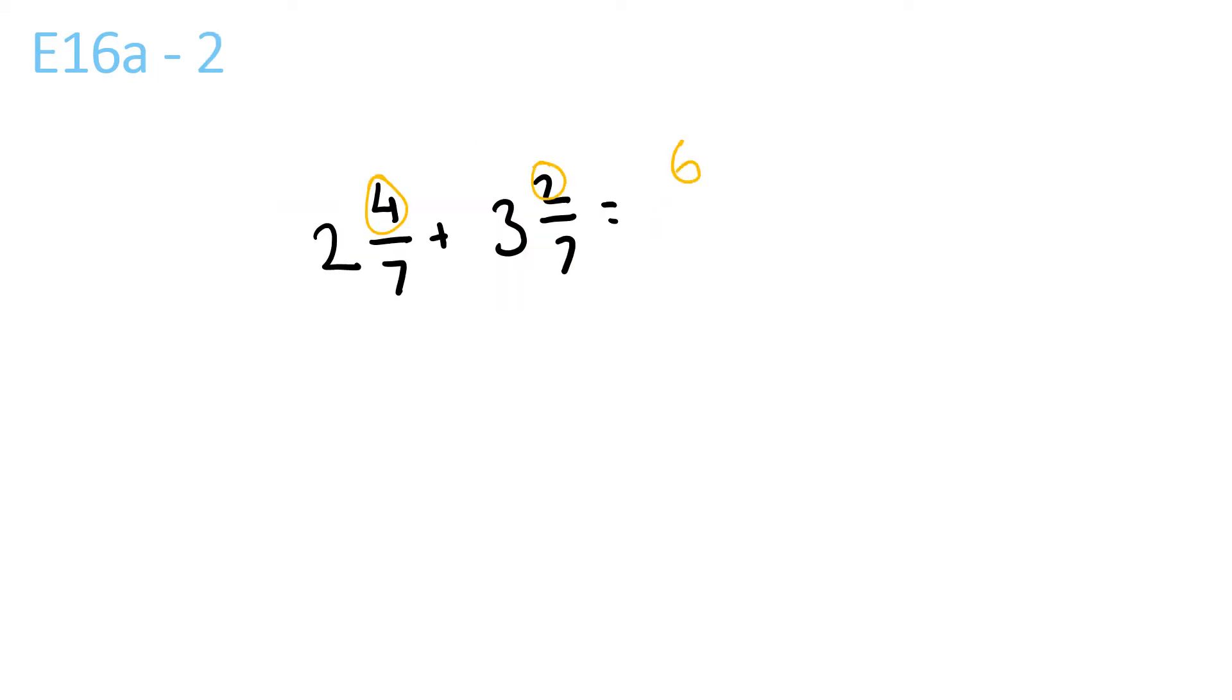2 plus 4 is 6 over 7, because the bottom one stays the same. Then you do 2 plus 3, which is 5. 3 plus 1 is 4, 2 plus 3 is 5, and then 7 stays the same.